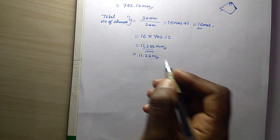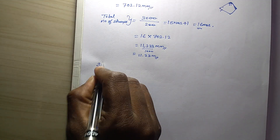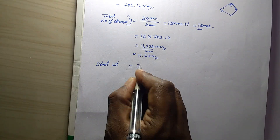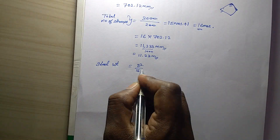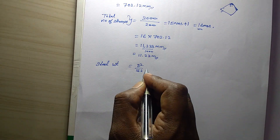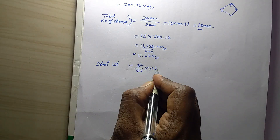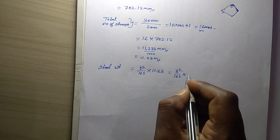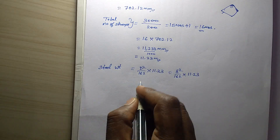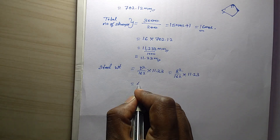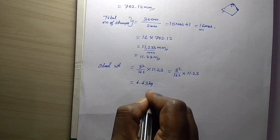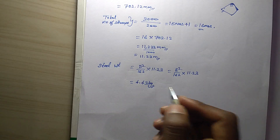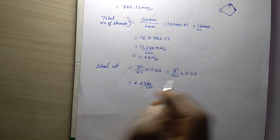Now we have the weight of steel — so we calculate the steel weight. d² by 162, 1 kg. This is 11.23 meter. 8² divided by 162, 1 meter — so we calculate the answer. We calculate the answer to the line — so 4.43 kg. So we do 1.43 kg. If we purchase the stirrups, we can make the cuts — 1.43 kg.